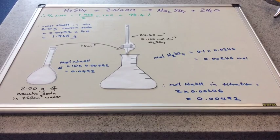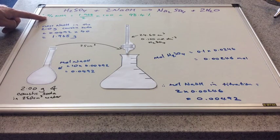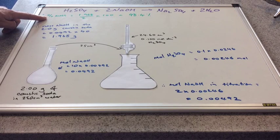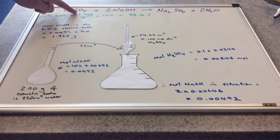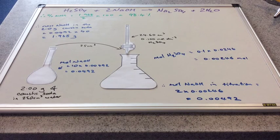The final step is to express the mass of sodium hydroxide as a percentage by mass. The mass of sodium hydroxide divided by the total mass of the sample, which was 2 grams, multiplied by 100, gives us a percentage by mass of 98.4%.